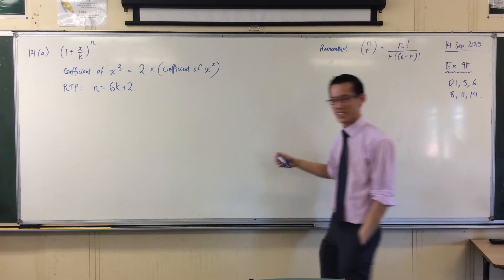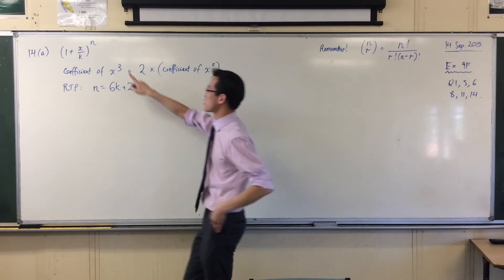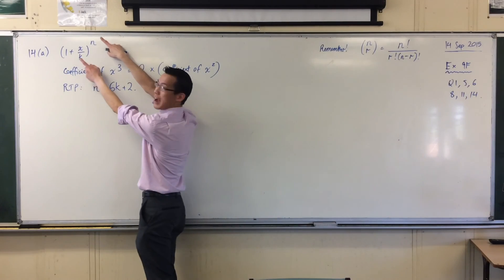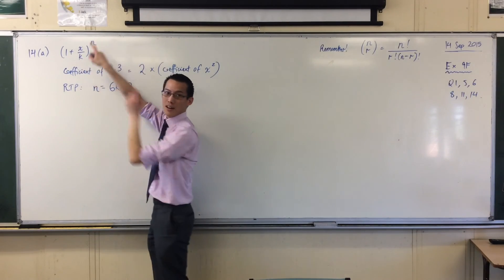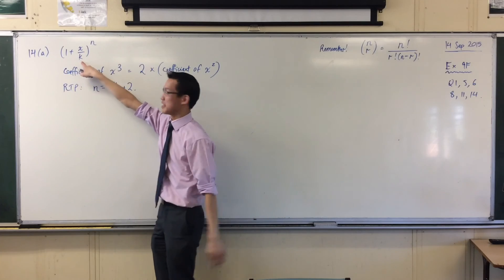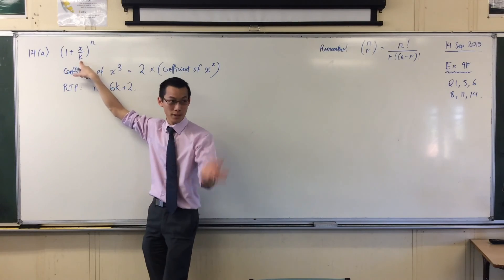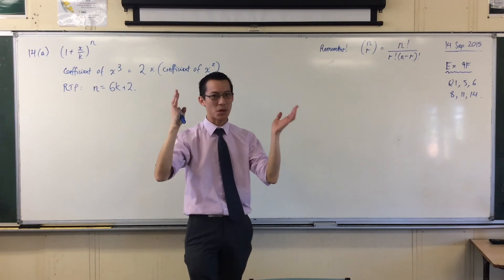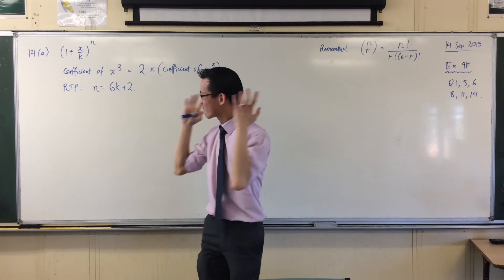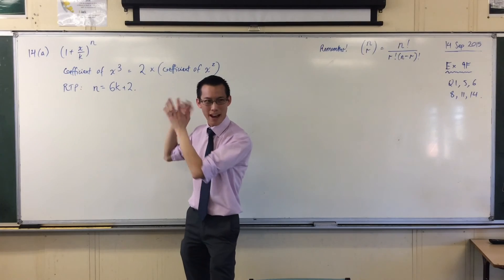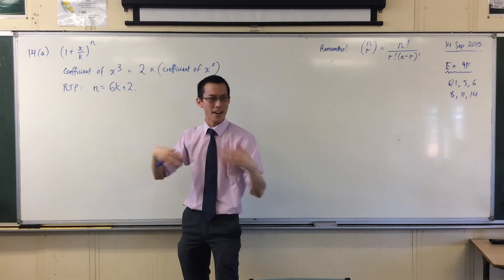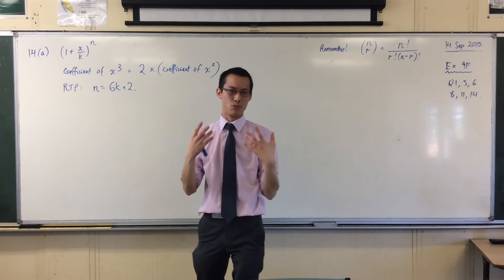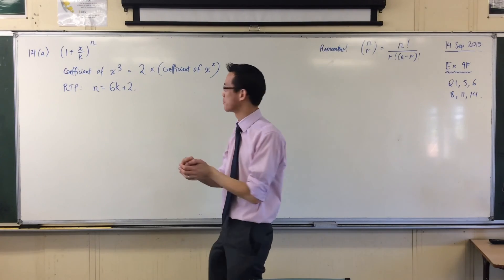Part of what makes this question difficult is that so much is abstract here. There's a k — who knows what it is? There's an n — who knows what it is? So there's just stuff to make this harder and more abstract and more conceptual for you.